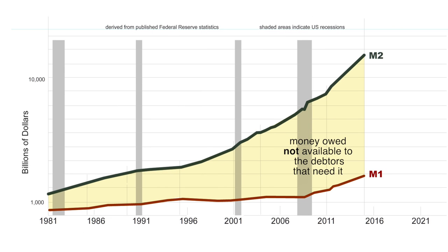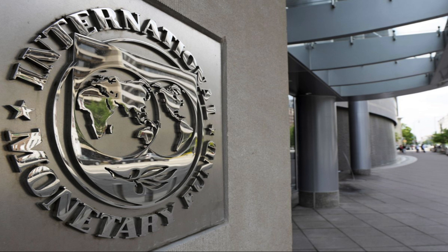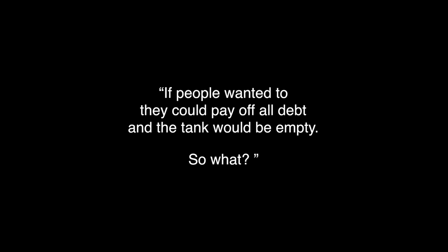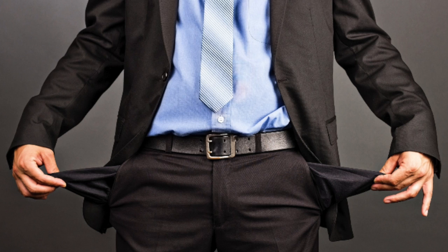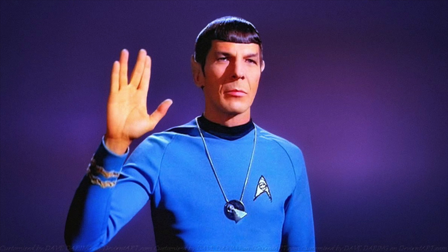Therefore, the space between M2 and M1 represents the proportion of bank credit money created as someone's debt on a repayment schedule that is not available to them — because someone else has it in their savings account, and you cannot pay your debts with my savings. Here is what Mr. IMF had to say about savings being unavailable to the debtors that created that money and needed to extinguish their principal debt to a bank: 'If people wanted to, they could pay off all debt and the tank would be empty. So what?' Apparently, the complete lack of any reason whatsoever for savers to pay off the debts of borrowers they don't know and will never meet doesn't prevent this from being Mr. IMF's solution. And if all debts were paid off, there would be no money. I am baffled why he would say such a thing.